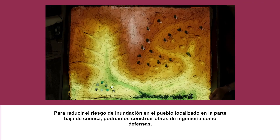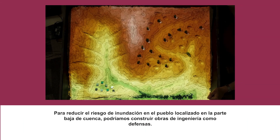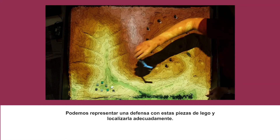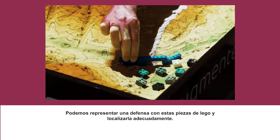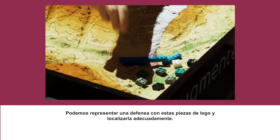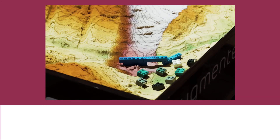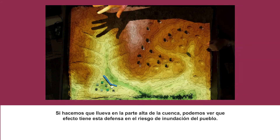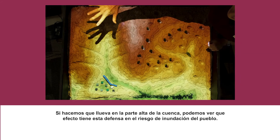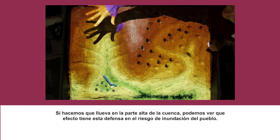To reduce the risk of flooding in the settlement at the bottom of the catchment, we can build engineered flood defences. We can represent these with some Lego bricks and position those in. Then if we rain on the catchment again, we can see what difference those make.